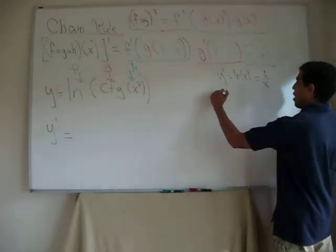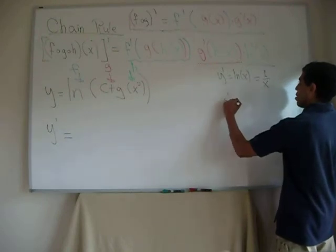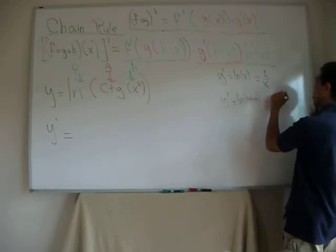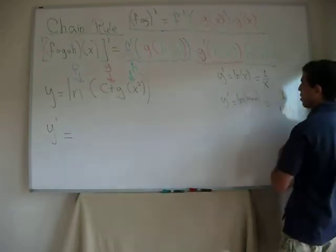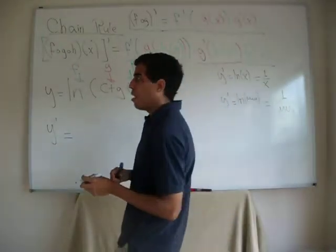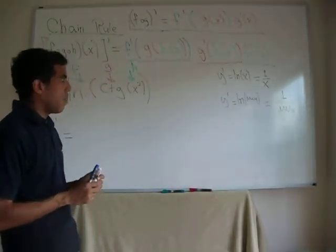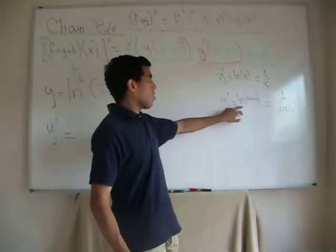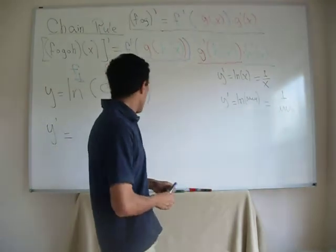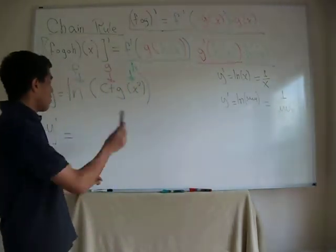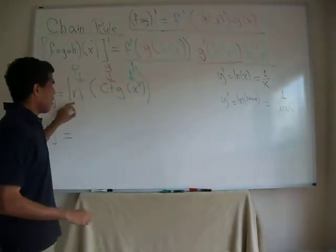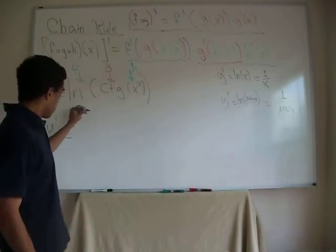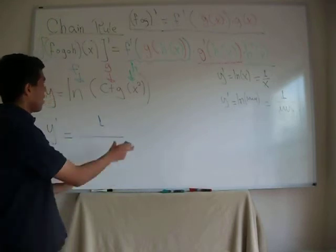It's one over the argument. So if I have y prime equals logarithmic of whatever, then the derivative of it is one over whatever. It's the argument what we care about. We have to think about it that way. It doesn't matter whether x or whatever the argument.